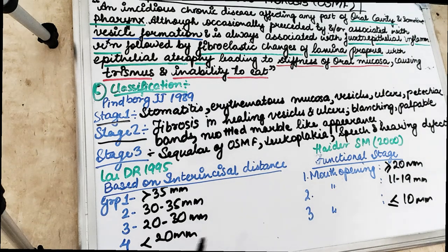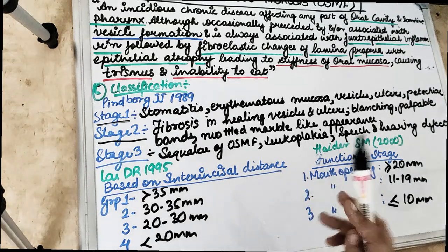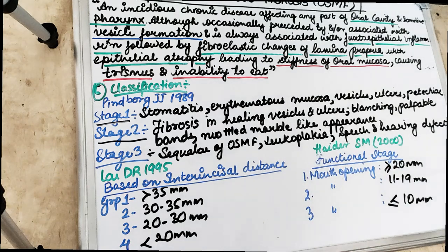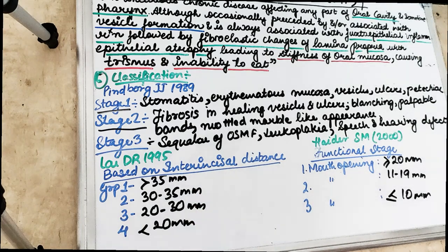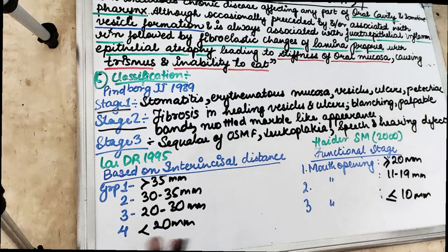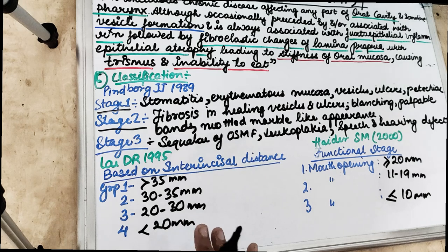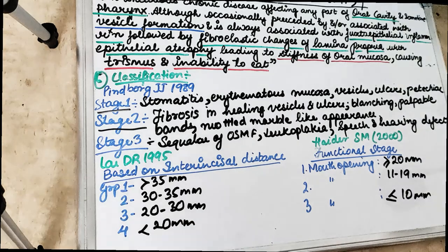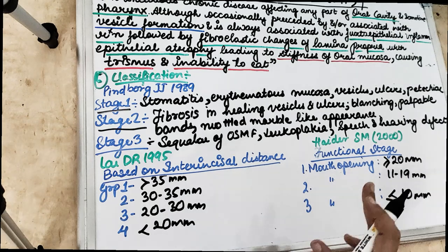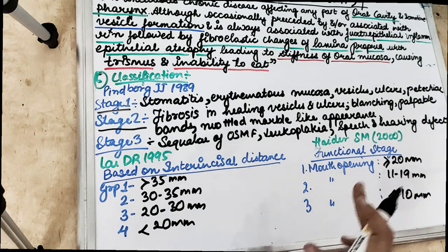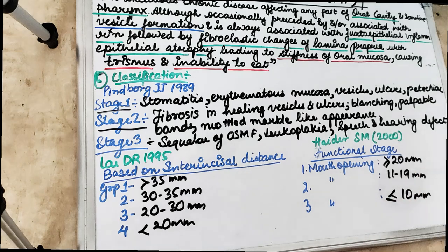Another classification is based on inter-incisal distance, since there is reduced mouth opening. There is also restrictive tongue movement. Based on the distance between the two incisors, we have four groups: Group 1 is more than 35 mm inter-incisal distance; Group 2 is 30–35 mm; Group 3 is 20–30 mm; Group 4 is less than 20 mm. For the functional stage: Stage 1 is mouth opening greater than or equal to 20 mm; Stage 2 is 11–19 mm; Stage 3 is less than or equal to 10 mm.